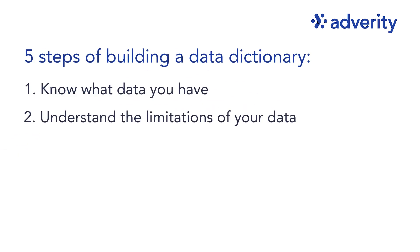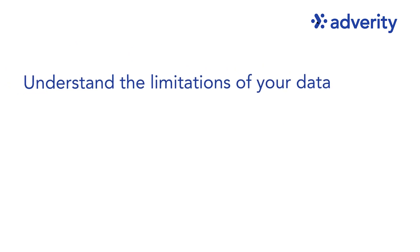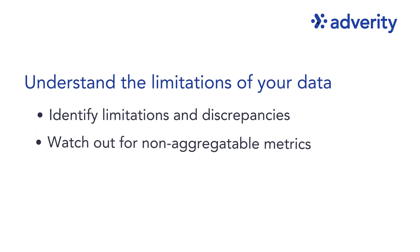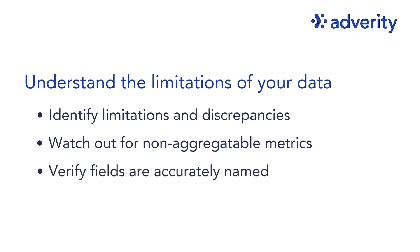Step 2 is gaining a proper understanding of the limitations and discrepancies in your data. In particular, watch out for non-aggregatable metrics, such as reach. Verify your fields are accurately named to prevent potential errors, such as unintentional merging or incorrect calculations, and pay close attention to field names to ensure data integrity.